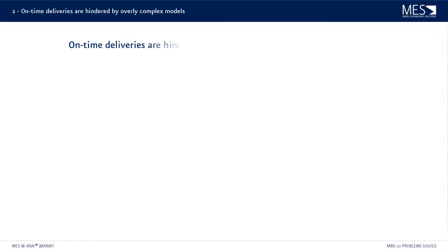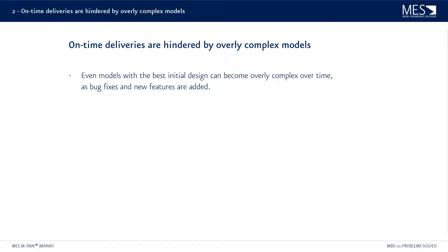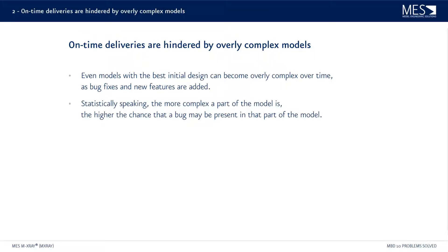Problem number two: on-time deliveries that are hindered by overly complex models. Models, even with the best initial design, may become complex over time — even overly complex due to added bug fixes and new features. Statistically speaking, the more complex a part of the model is, the higher the chance that a bug may be present in that part of the model. Therefore, reducing the complexity makes finding and fixing a potential bug easier.